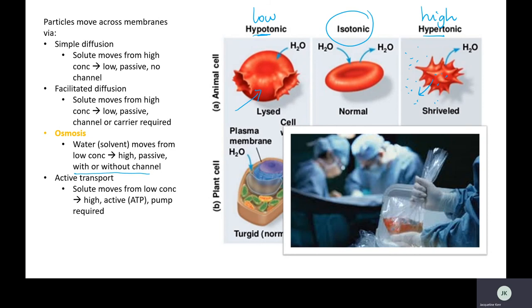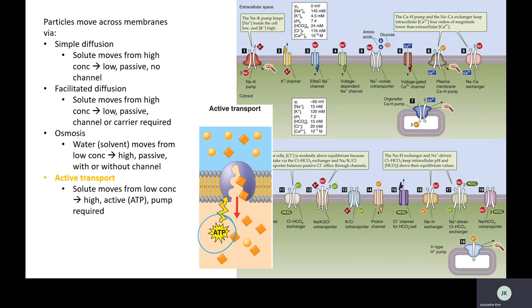That takes us to active transport. This is our form of transport that requires an energy input, ATP. We tend to refer to these proteins embedded in the membrane as pumps rather than channels or carriers. Here's a selection of different proteins in the membrane, some are channels, some are pumps. The ones that require ATP are pumps, they're active. Some just allow for facilitated diffusion. There are also complexities about things being moved in opposite directions or co-transported together.